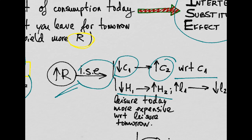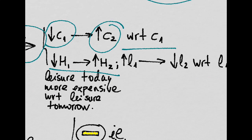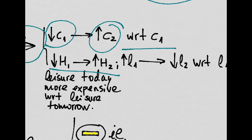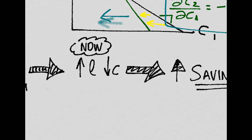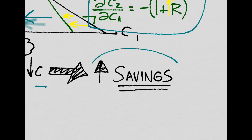Leisure today is more expensive than leisure tomorrow, because now you can work more and get paid more in the future. So you will want to save more — that is why leisure is more expensive. You decrease leisure now and increase the workload today. Since today you are working more but consuming less, you are actually saving more for the future. And in the future, you will be able to relax, work less, and consume more.